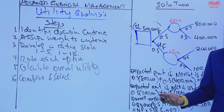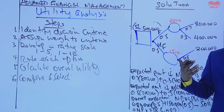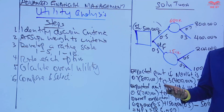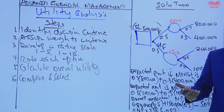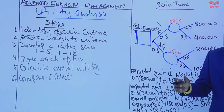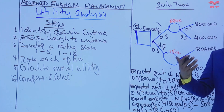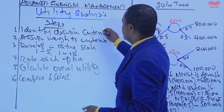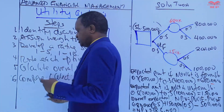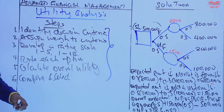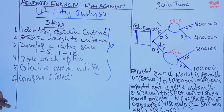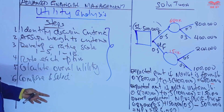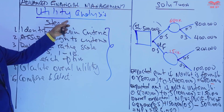After rating each option and calculating the overall utility, you compare — comparing the overall utility scores of the options — and then select the option with the highest score. This is just a general procedure on how to carry out utility analysis.